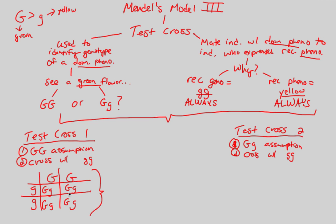When you look at the offspring of this first test cross, every single offspring is going to look exactly the same — all green. If all offspring are green, you were right: your assumption that the plant is capital G capital G is confirmed. The only way to affirm this assumption is to cross with a lowercase g lowercase g — a yellow — individual. This homozygous dominant genotype shows itself in the next generation as heterozygotes throughout.